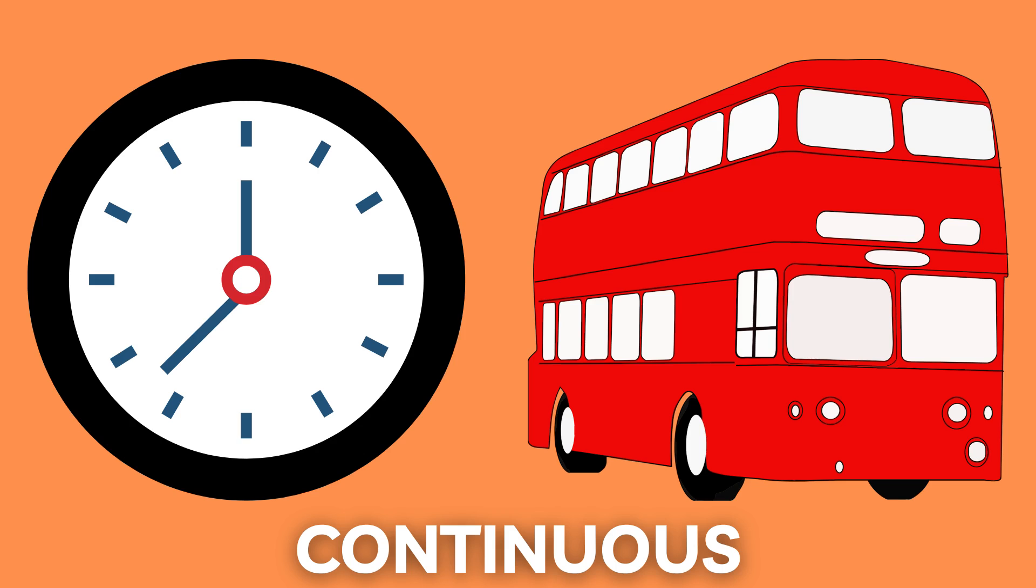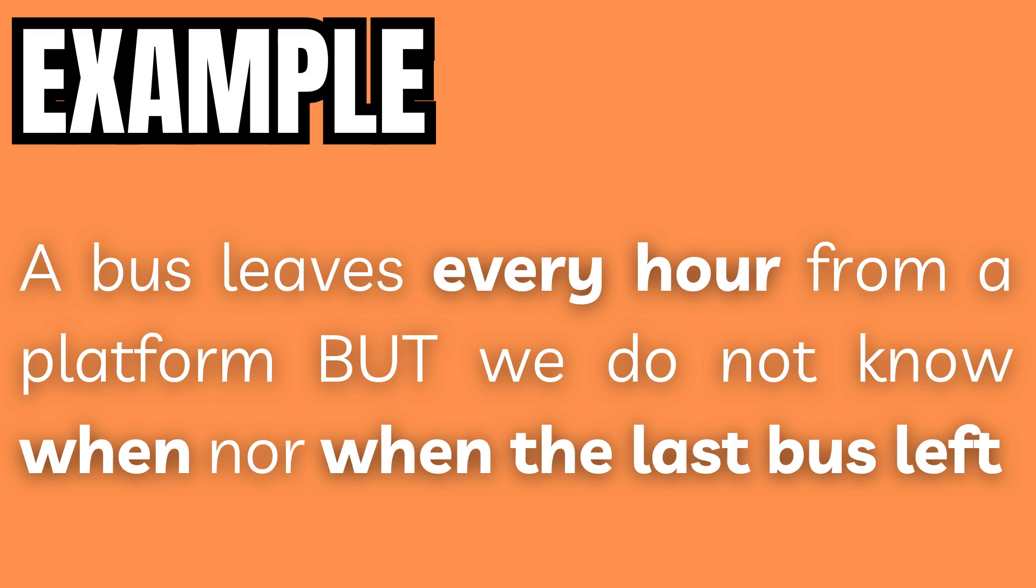An example of a continuous uniform distribution could be what time the next bus arrives when you know it arrives every hour, but you don't know when the last one left.